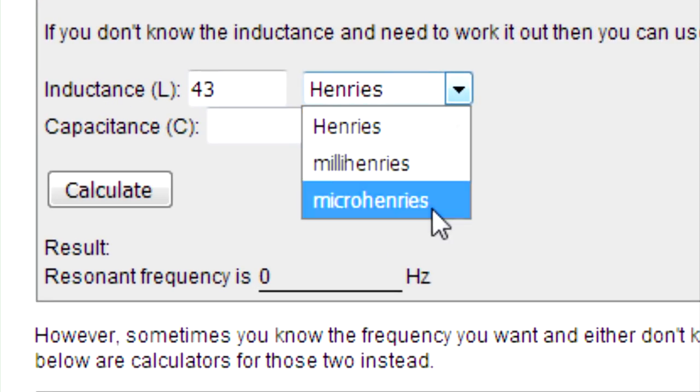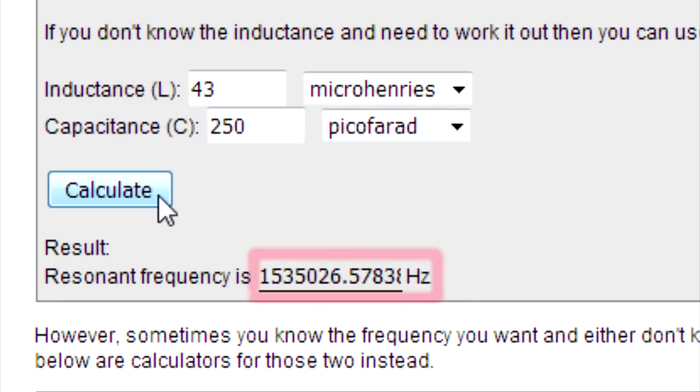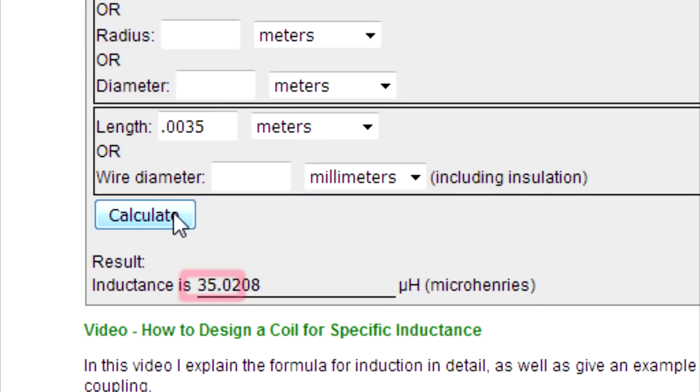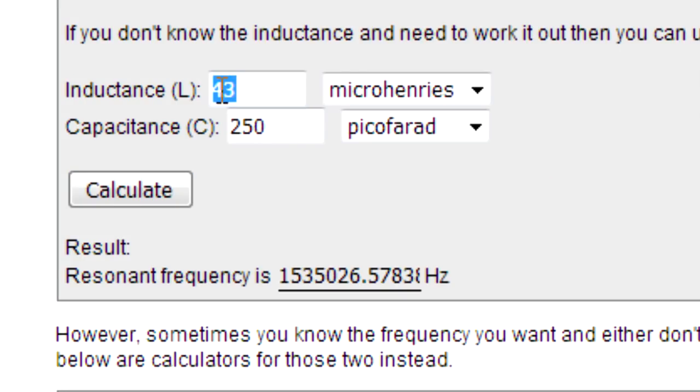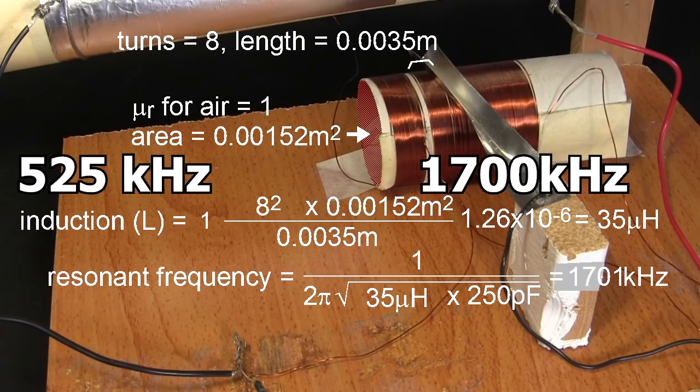Switching to the webpage with the LC resonance calculator, we plug that in and get 1535 kilohertz, which is less than the 1700 kilohertz we want. So we go back to the inductance calculator webpage and put in 8 turns instead. That gives us 35 microhenries, and putting that in the LC resonance calculator, we get 1701 kilohertz. Perfect. So our coil and capacitor will give us the full 525 kilohertz to 1700 kilohertz range.